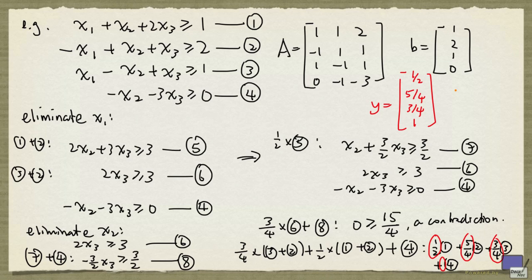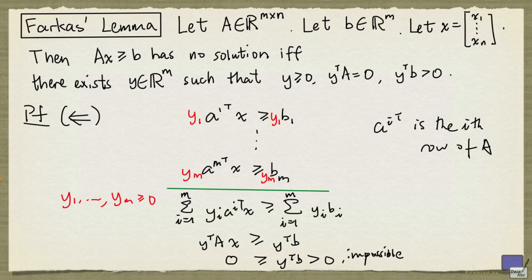And you can easily check that y transpose A is going to be 0, and y transpose B is exactly 15 over 4. And that's exactly the kind of certificate that we want to find here.